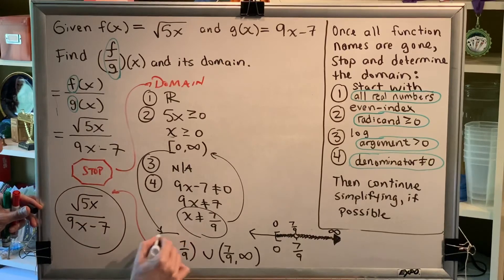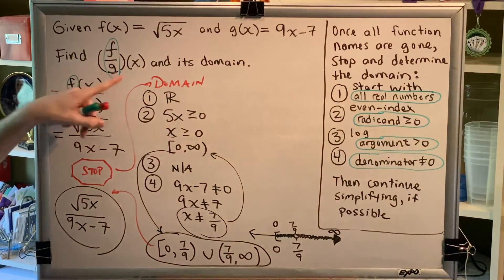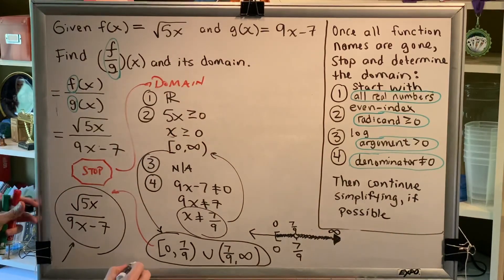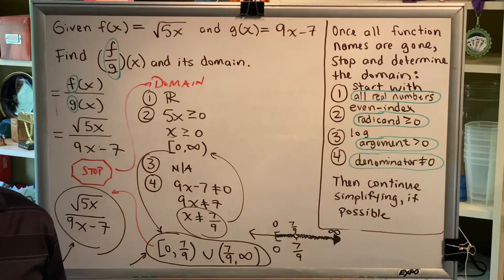There are two questions and that's why there are two answers to this problem. Find f over g of x. That would be this. Find its domain. That would be this. All right, we finish this problem.